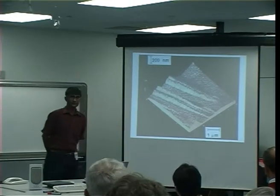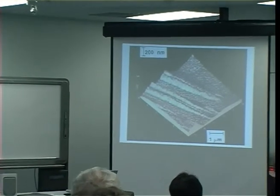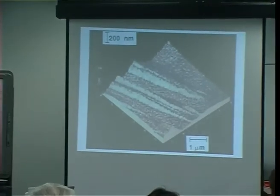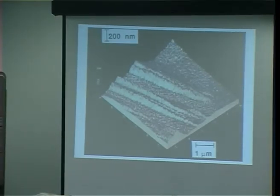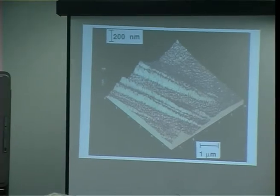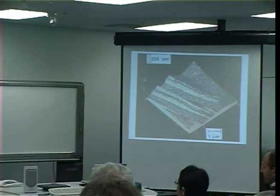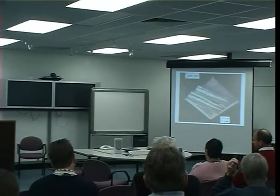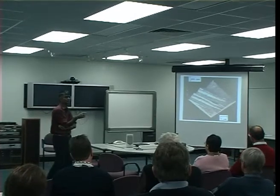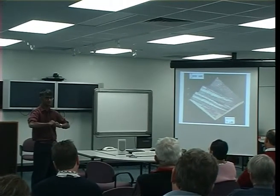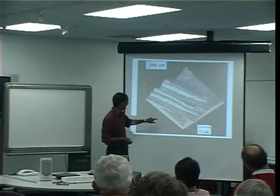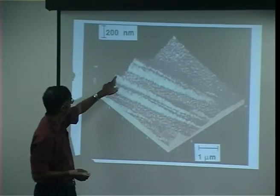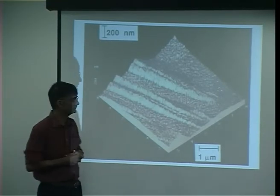If bainite is a displacive transformation, then we also expect to see displacements when we polish a sample of austenite completely flat and allow it to transform into bainite. Given the plate scale of a quarter of a micrometer — just below the resolution of an optical microscope — we can't use normal techniques. This is an atomic force microscope image of a specimen transformed to bainite from a polished surface, and you can see the shear displacements characteristic of a displacive transformation.